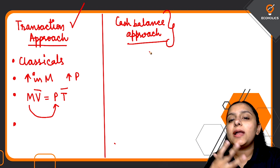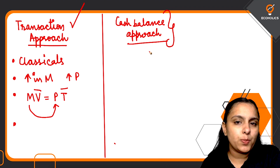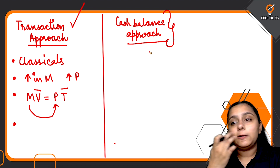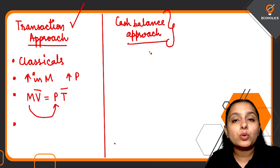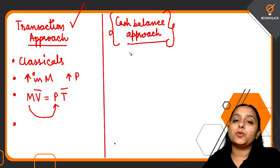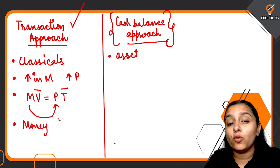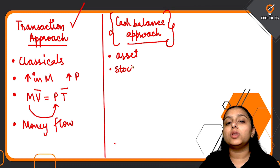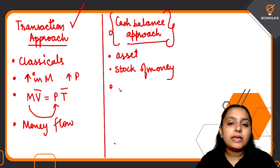The cash balance approach was brought by post-Keynesian developments. People following this approach include Tobin and Friedman, whose restatement of money theory says that people are going to hold on to cash. This approach says that money is used as an asset as well. While the transaction approach talks about the flow of money — how many times it exchanges hands — the cash balance approach talks about the stock of money, treating it as a stock concept rather than a flow concept.